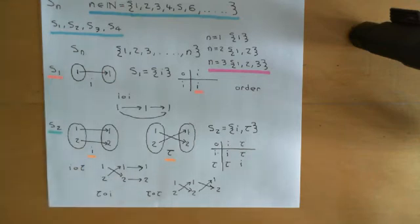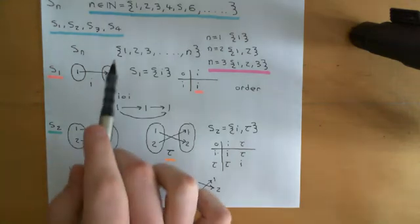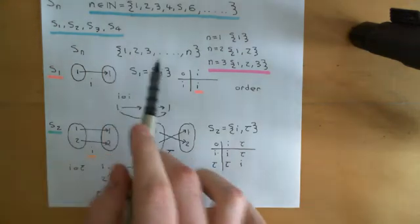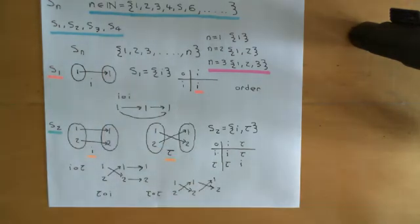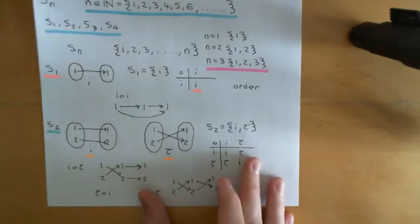The composition is just the composition of those set permutations. So what is the order of S_n? What is the number of permutations of the set {1, 2, 3, ..., n}? Let's go over the page and figure this out.